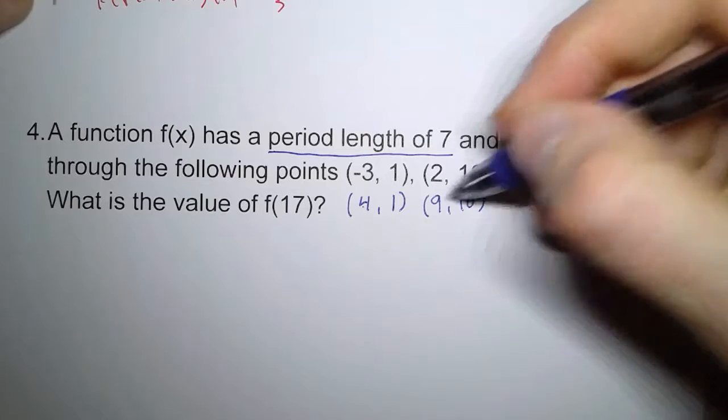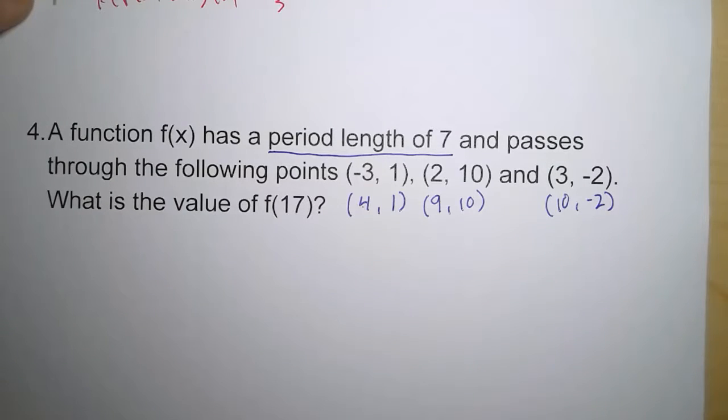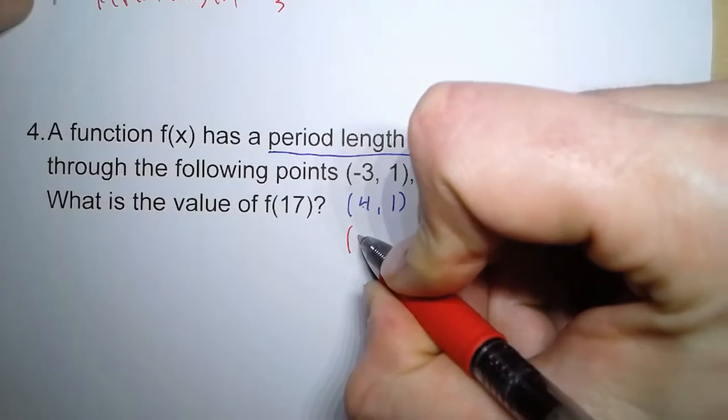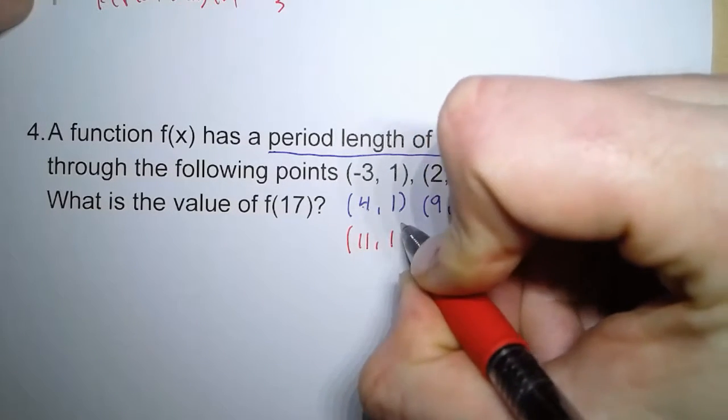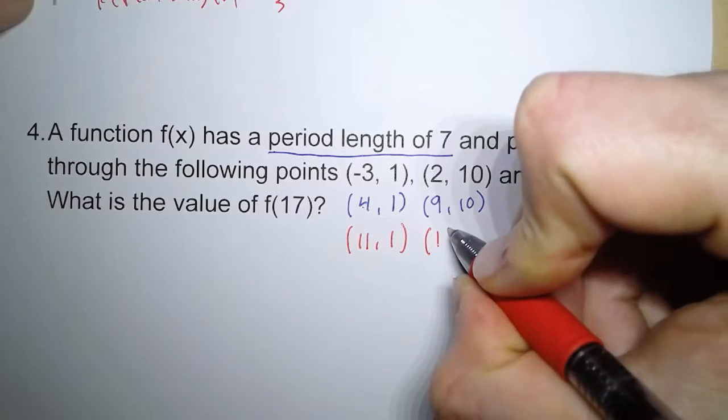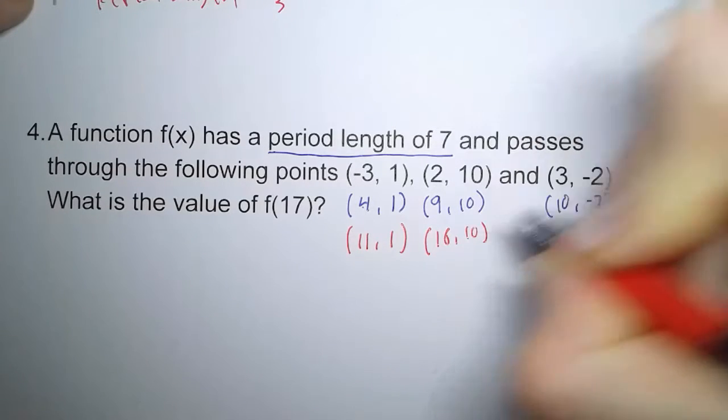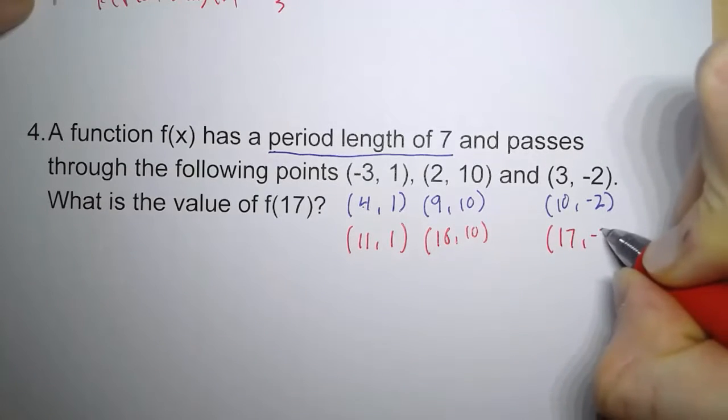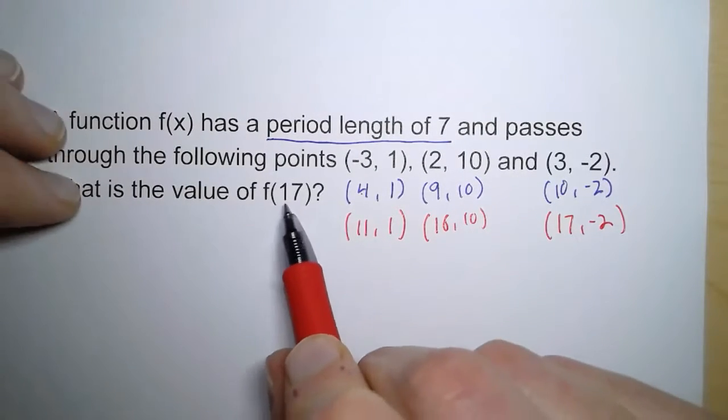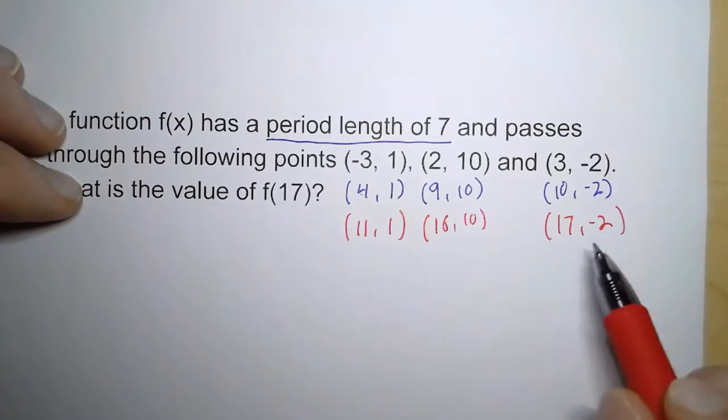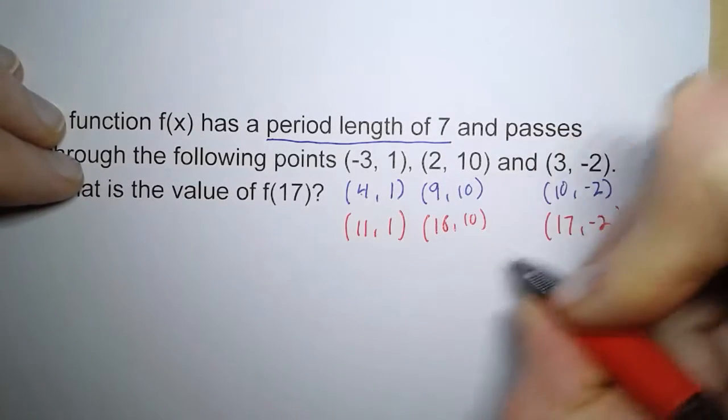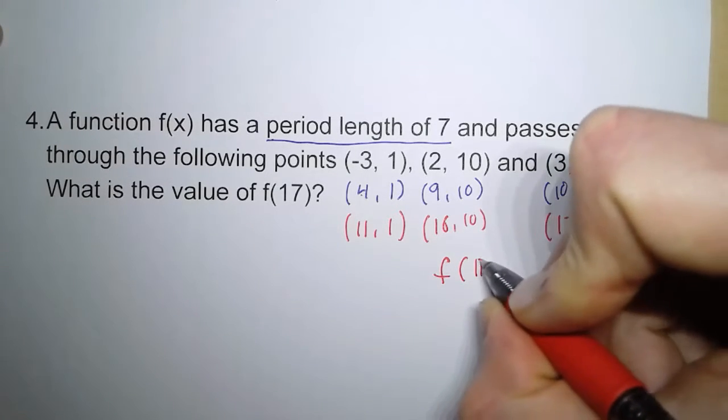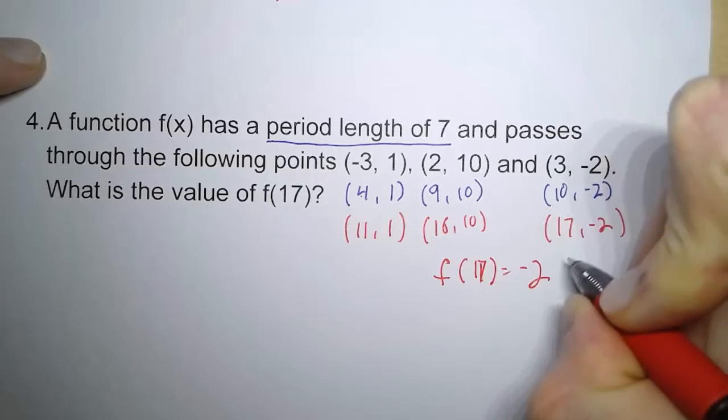Now, none of these x values are 17. So we can just add seven again. Add seven to four, we get 11. Add seven to nine, we get 16. We add seven to 10, and we get 17. And so what we're asking for is what's the y value when x is 17? And there we go, there's our answer. F of 17, that equals negative two.